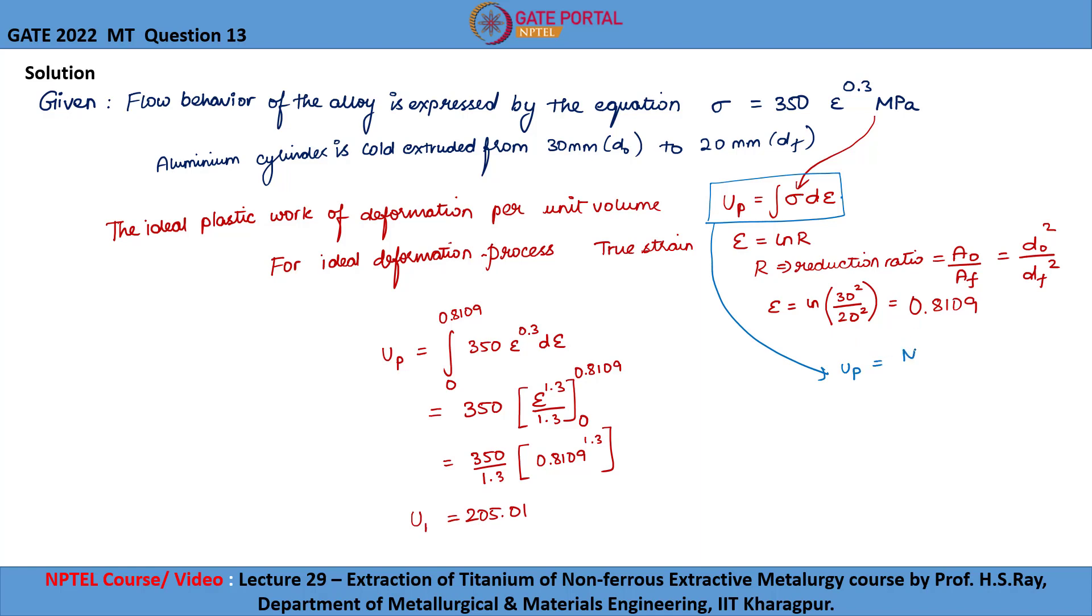Where sigma is MPa and epsilon is strain, which is the change in length by original length. Let us take it as meter by meter.